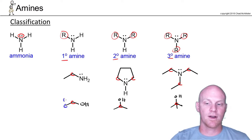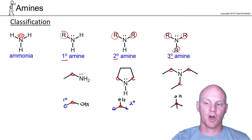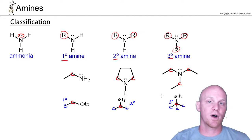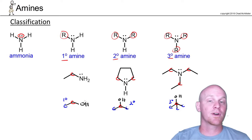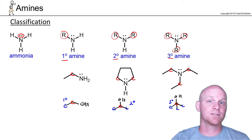This would be a primary alcohol because the carbon with the OH is only bonded to one other carbon. This would be a secondary alcohol since the carbon with the OH is bonded to two carbons. And this would be a tertiary alcohol since the carbon with the OH is bonded to three carbon chains. So for alcohols, it's all about the carbon the OH is bonded to — but for amines, it's all about the nitrogen itself and how many carbon chains are directly bonded to it.